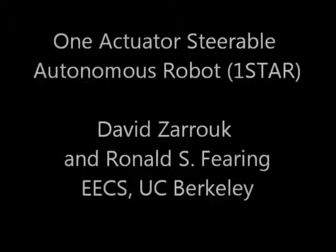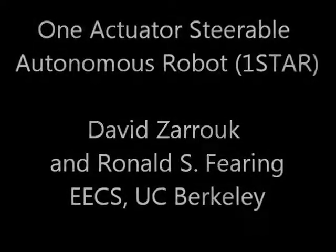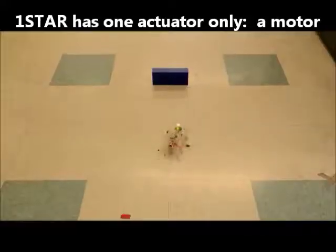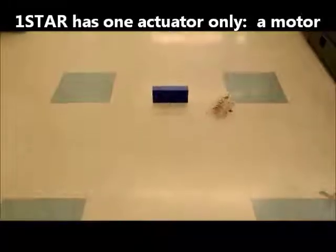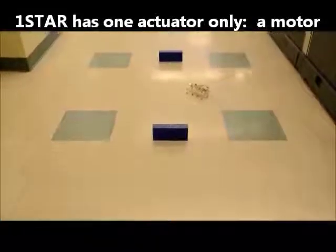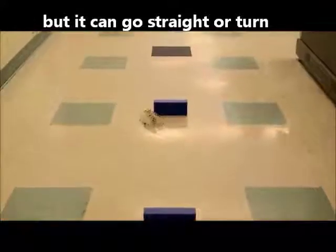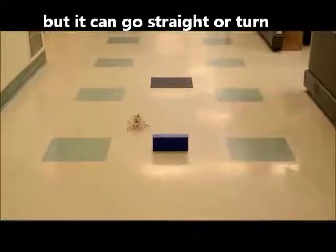This video presents One Star. One Star is a one-actuator steerable autonomous robot. Even though One Star has one motor only with no other actuators, it can be driven straight or be turned right clockwise or counter-clockwise.